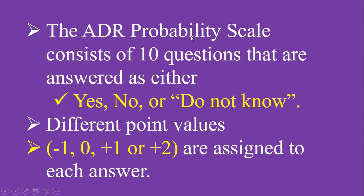The ADR Probability Score consists of totally 10 questions that are answered as either yes, no, or do not know. There are different point values ranging from minus 1, 0, plus 1, or plus 2, which are assigned to each answer.